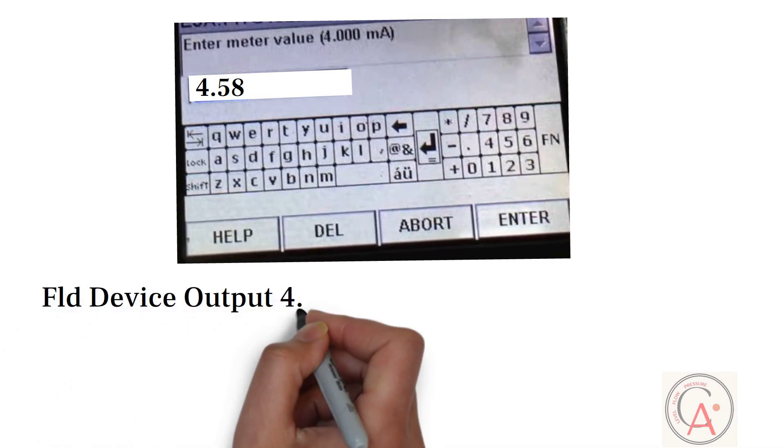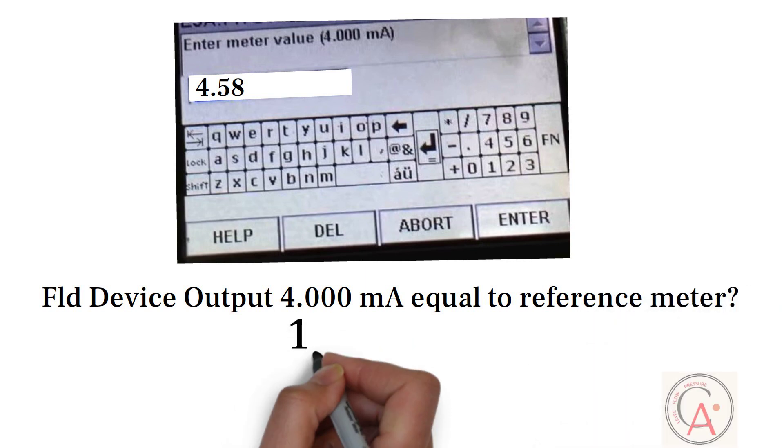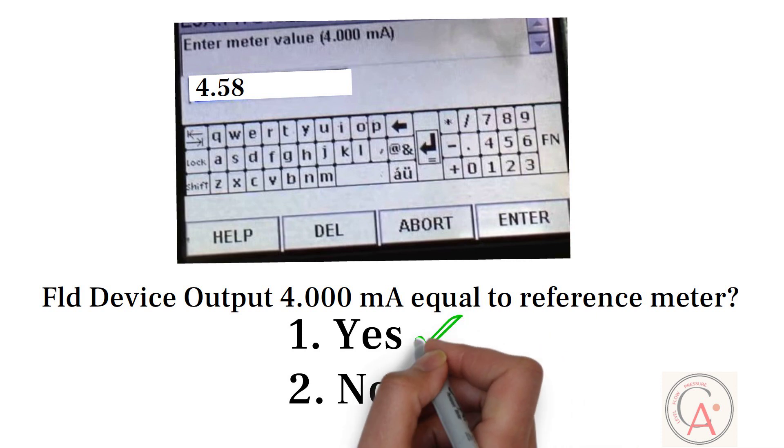Once you press ENTER button, field device 4 milliampere equal to reference meter message appears on the screen. And it has two options: yes and no. Select YES option and press ENTER button. Once ENTER button is pressed, analog output of differential pressure transmitter will be set to 4 milliampere.